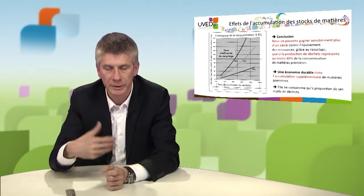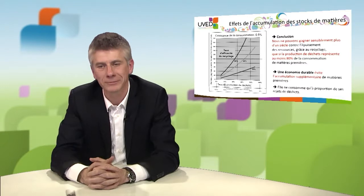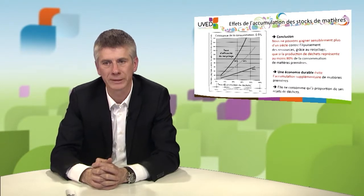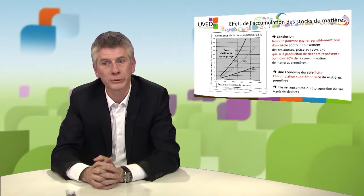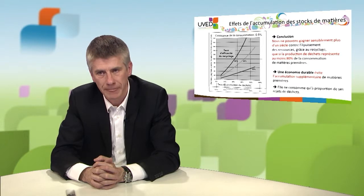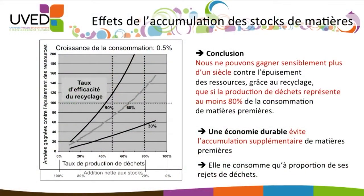For a sustainable economy, we need more than a century of shift to give time to the economy to adapt and allow future generations to manage evolutions in society. To recycle a raw material at 60% and go beyond 100 years, we need to produce at least 70% waste. So when we consume 100 tons of steel, we need to send 70 tons to waste that will then be recycled.